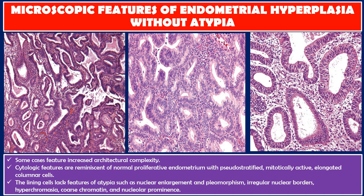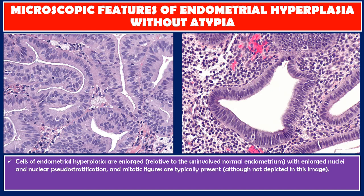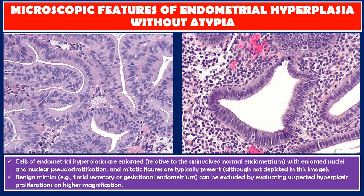In this case, the cells of endometrial hyperplasia are enlarged relative to the uninvolved normal endometrium, with enlarged nuclei and nuclear pseudostratification. Mitotic figures are typically present, although not depicted in this image. The lining mimics such as florid secretory or gestational endometrium can be excluded by evaluating suspected hyperplastic proliferations on higher magnification.